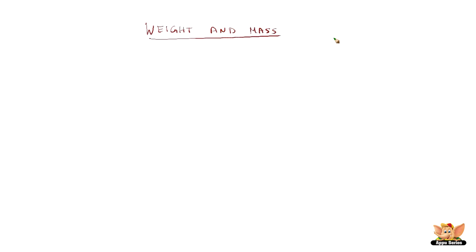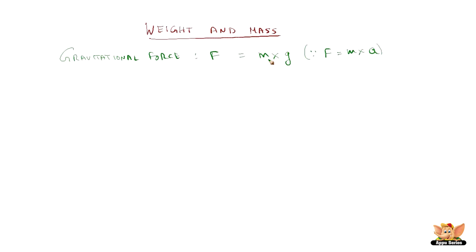From Newton's laws, Galileo's observations, and Newton's gravitational theory, we know that the Earth attracts every object with a certain force. That force is called gravitational force, and for a falling body it is given as mass multiplied by acceleration due to gravity — F = mg — where m is the mass of the body, g is the acceleration due to gravity, and F is the gravitational force with which the Earth attracts objects.